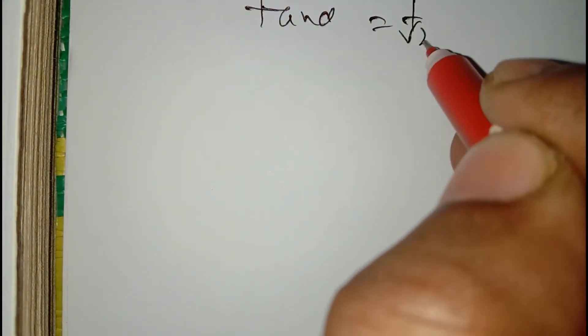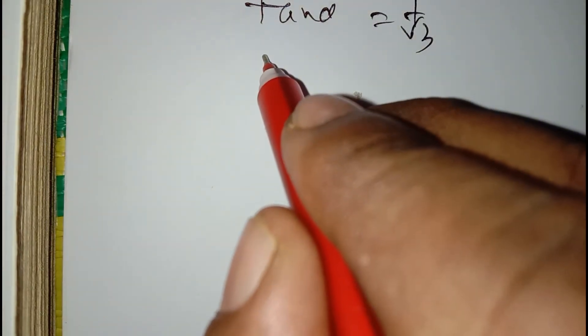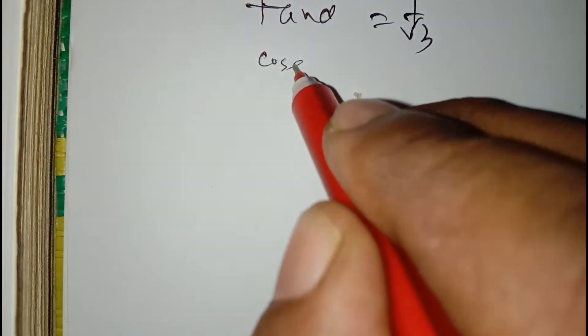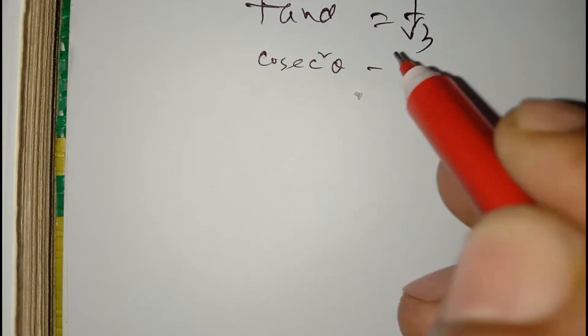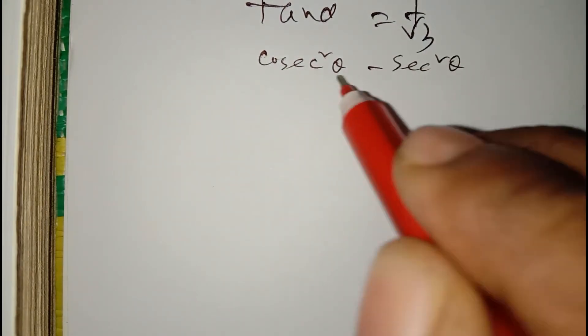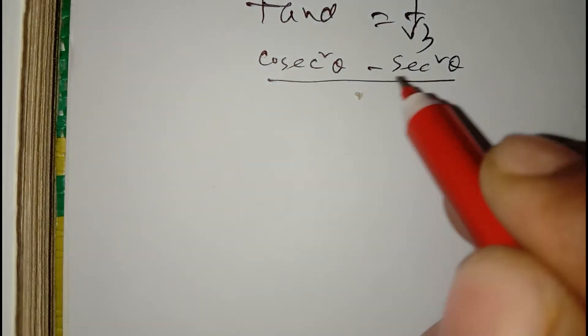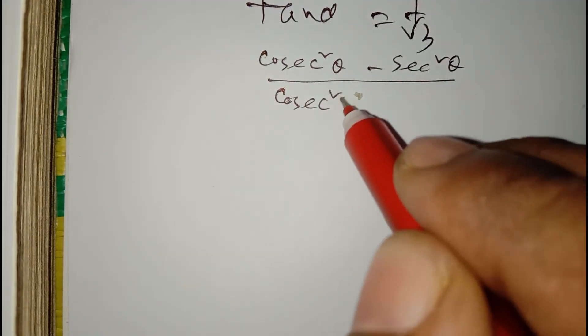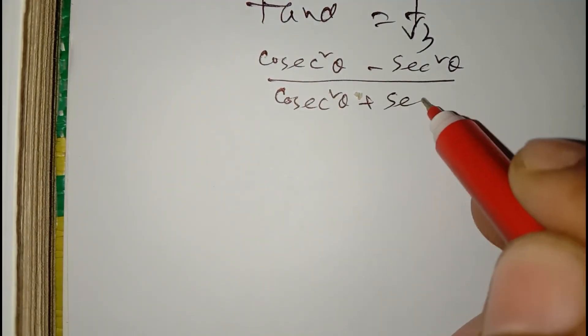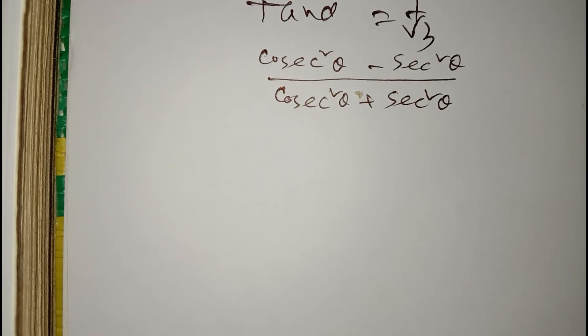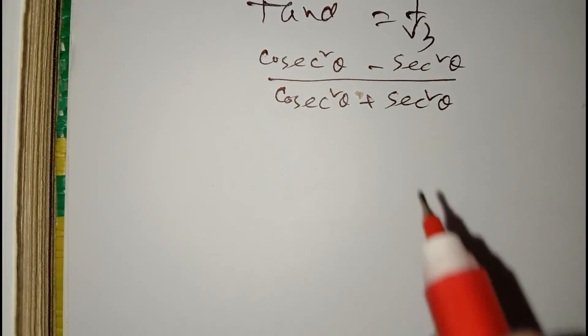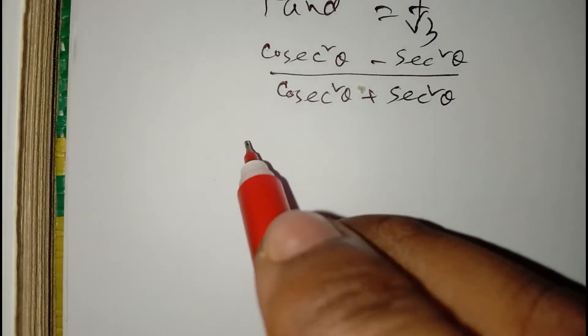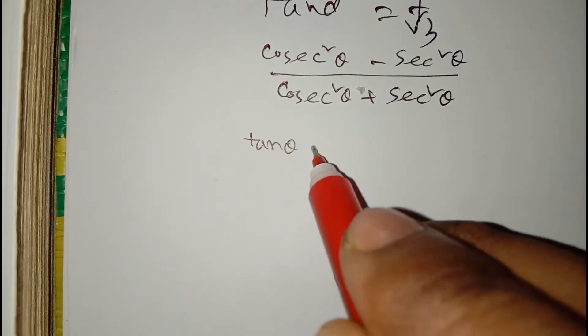Again, if tan theta is equal to 1 by root 3, then find the value of cosec square theta minus sec square theta, divided by cosec square theta plus sec square theta.